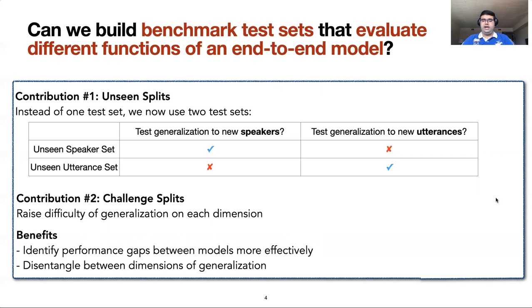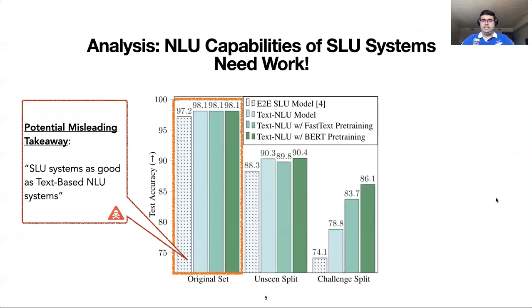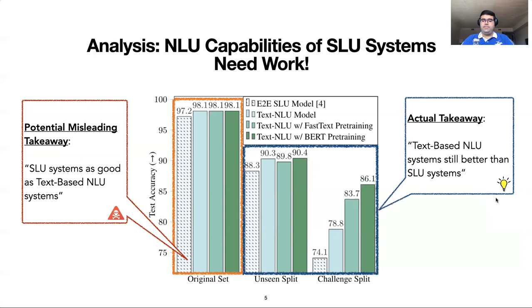Our splits were able to identify larger performance gaps between end-to-end SLU systems, which can facilitate actionable model comparisons. They can also identify which component of the SLU system needs further improvement. Existing SLU benchmarks make practitioners think that SLU systems are as good as their text-only counterparts that directly take in the gold text input. However, in reality, we observe significant performance gaps between the SLU system and NLU systems on our proposed splits. Hence, we believe that our splits allow more realistic comparisons and can drive future model development.